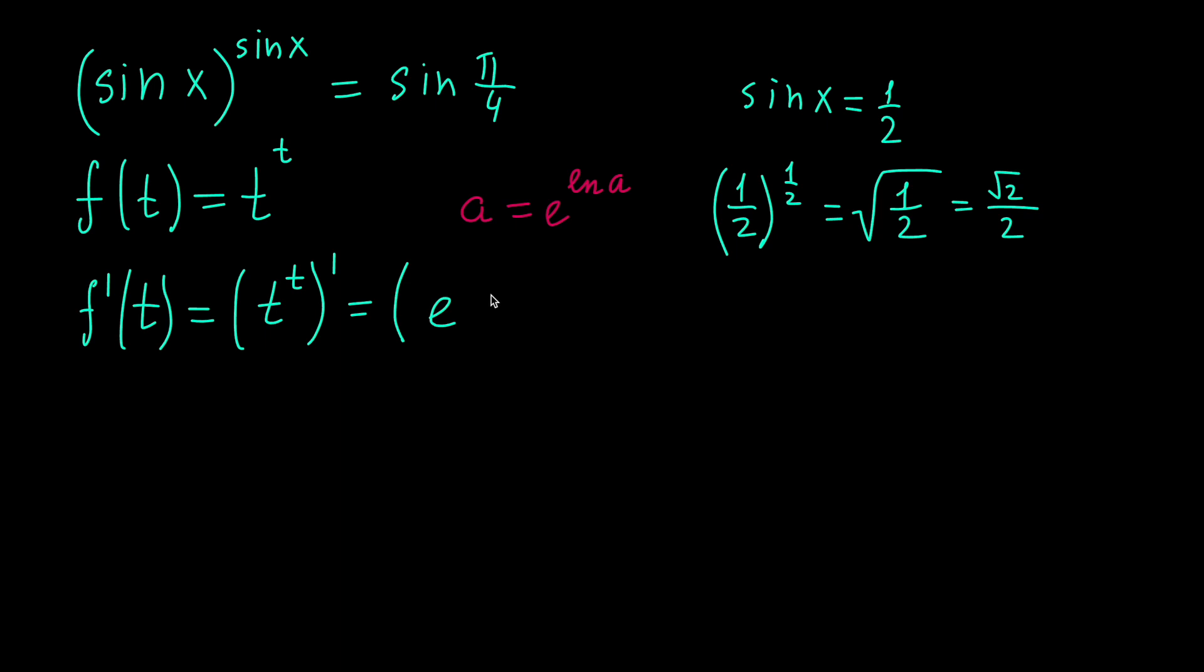So for the function, we have e raised to the power of natural logarithm of t raised to the power of t prime, and the exponent jumps in front of the logarithm. So we have e raised to the power of t natural logarithm of t.